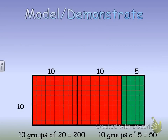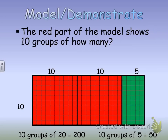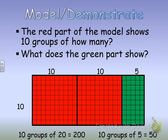We can use our breaking apart method to break apart our number and create an array. Looking at this array, the red part of the model shows 10 groups of 10 — so the first group is 10 groups of 10, and the second is another set of 10 groups of 10, giving me 10 groups of 20 total. The green part shows 5 groups of 10, or 10 groups of 5. My answer for the green section is 50, and my 10 groups of 20 gives 200.